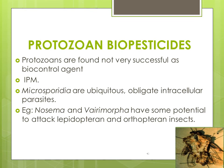Let's talk about protozoan biopesticides. Although protozoans infect pests and induce chronic and debilitating effects on targets, the use of protozoa as biopesticides has not been very successful. Microsporidian protozoans are used as possible biocontrol agents in IPM. Microsporidia are ubiquitous obligate intracellular parasites; for example, Nosema and Vairimorpha have potential to attack lepidopteran as well as orthopteran insects.